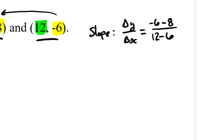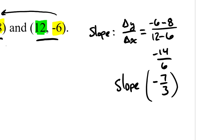negative 6 minus 8 is negative 14, and 12 minus 6 is 6. So my slope is negative 14 over 6, and I can also simplify that further. I can write it as negative 7 thirds. So this is the slope of the line that goes through these two points.